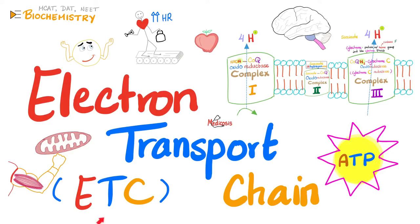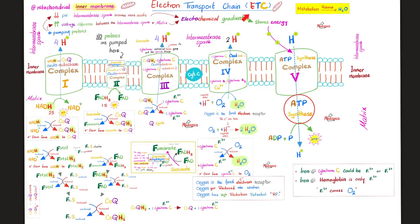To learn more about the electron transport chain, there is a video titled Electron Transport Chain in the biochemistry playlist. Oxidative phosphorylation: the oxidative part involves oxygen at complex four, and the phosphorylation part is the phosphorylation of ADP so that it becomes ATP. Medicine makes so much sense once you understand what you're talking about.